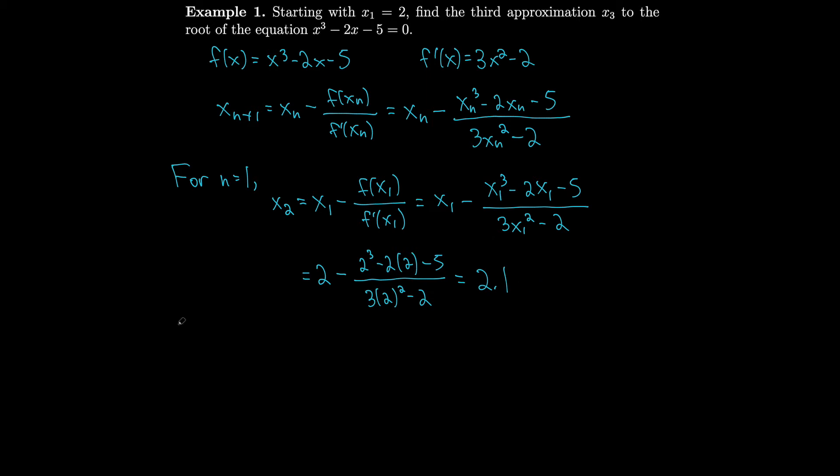We can plug in n = 2 now to get x₃. For n = 2, we have x₃ = x₂ - (x₂³ - 2x₂ - 5)/(3x₂² - 2). So that's 2.1 minus (2.1³ - 2(2.1) - 5) all over (3(2.1)² - 2). That ends up being about 2.0946. Turns out that this approximation for the root is actually accurate to within four decimal places. So Newton's method is pretty cool.